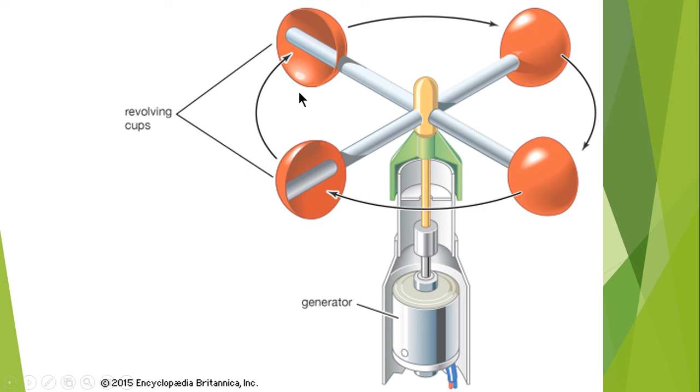These are the four cups which will be revolving when the wind is hitting these cups and this is the generator which in turn will be producing the voltage or the electrical energy.